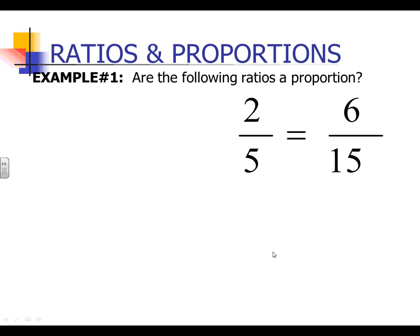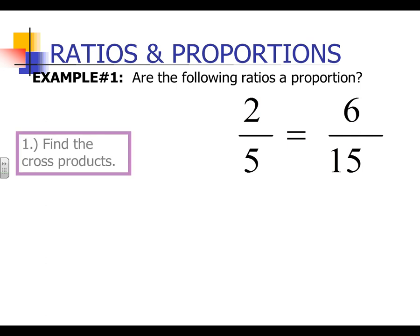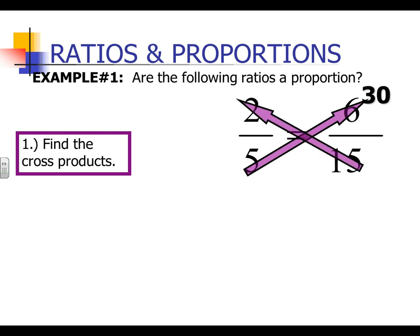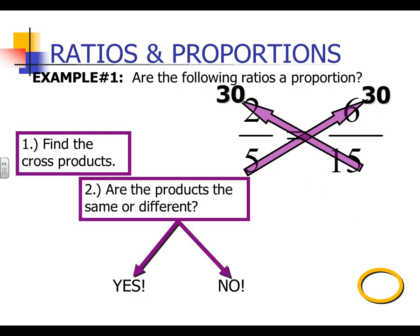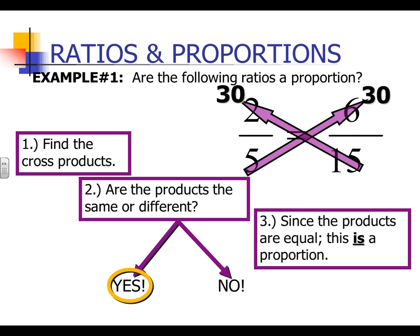So let's go ahead and get into our first example. Are the following ratios a proportion? One of the easiest methods is to merely find the cross products. Multiply diagonally — 5 times 6, which comes out to 30, and 15 times 2, which is also 30. If you get the same cross products, then you can call them a proportion.